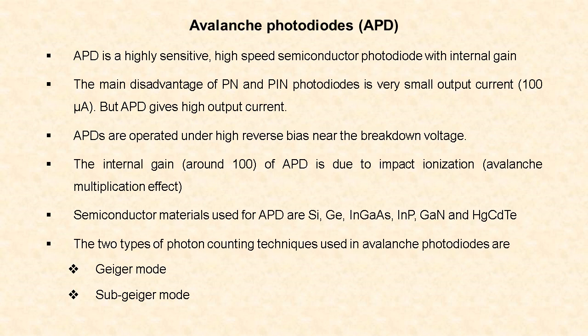In avalanche photodiodes, two types of photon counting techniques are used: Geiger mode and sub-Geiger mode. Geiger mode avalanche photodiodes use the single photon counting principle at a voltage little more than the threshold breakdown voltage. At this voltage, even a single electron-hole pair is capable of triggering a strong avalanche. In this situation, the quenching circuits reduce the voltage by a fraction of a second. This stops the avalanche for a time being and photo detection is possible. Sub-Geiger mode operation is a technique in which an avalanche photodiode is operated at a bias voltage that is lower than the breakdown voltage.